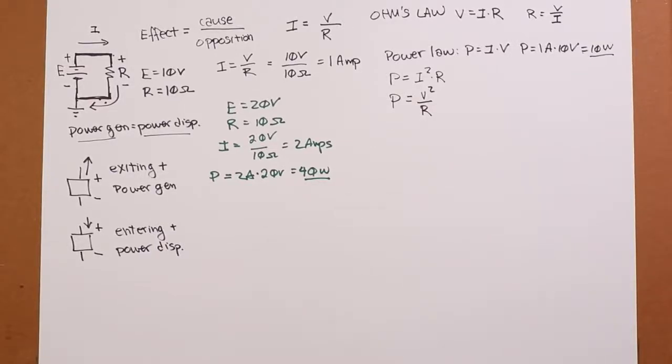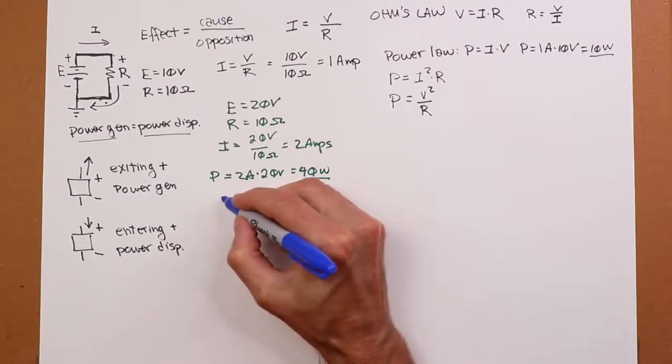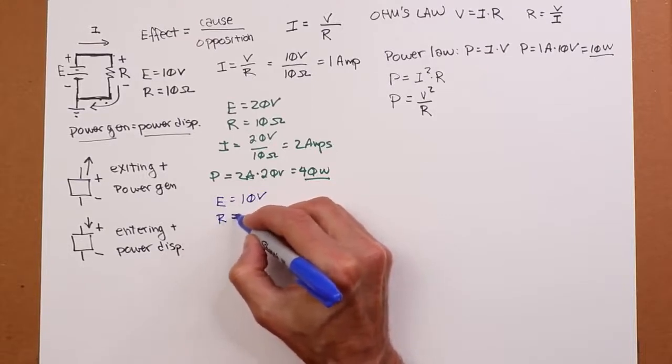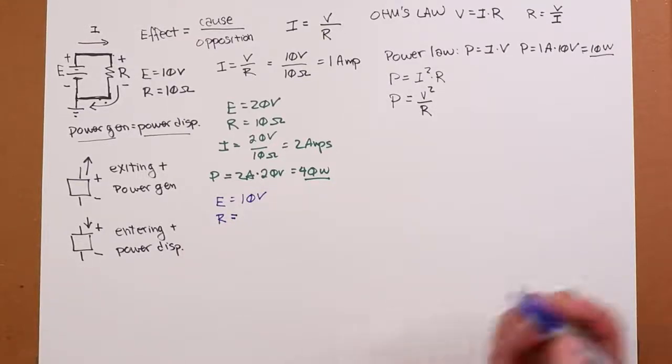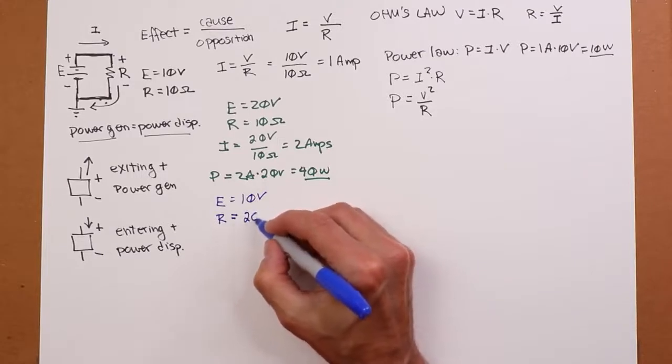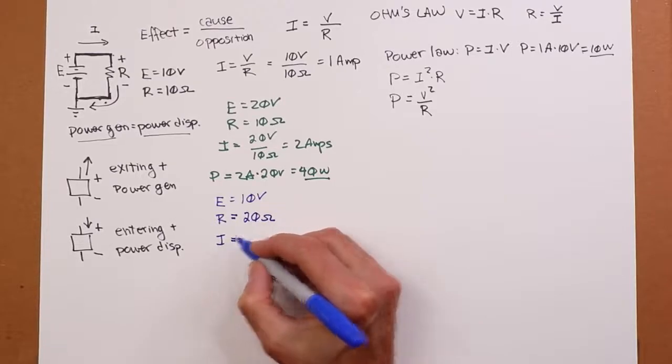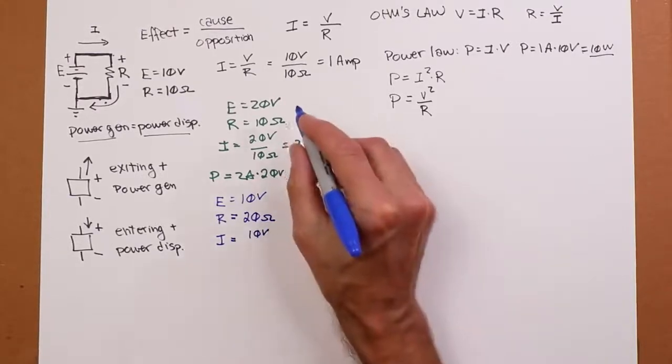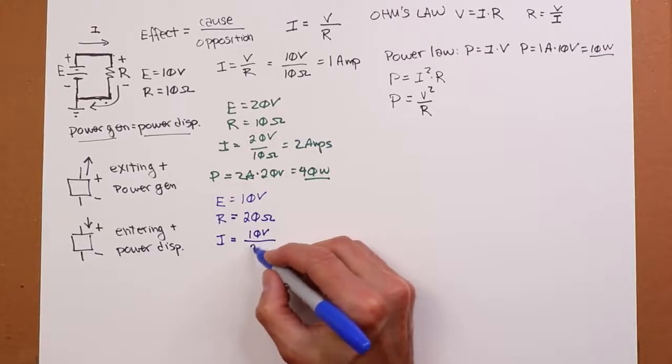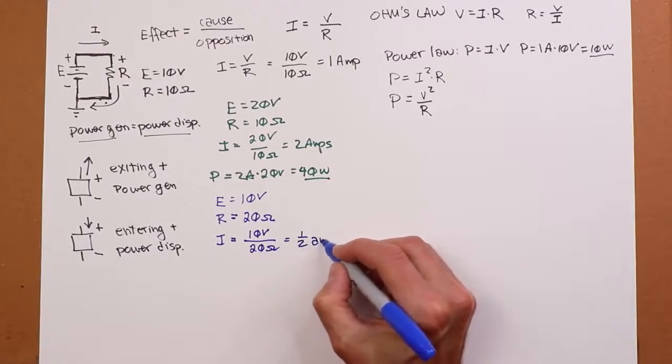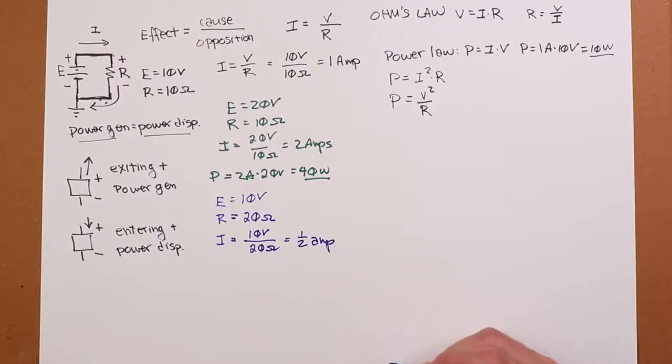Okay, now changing colors again. Let's bring that voltage back to 10 volts. And this time we'll change the resistance. Let's bump up the resistor to 20 ohms. What do we wind up with? Well, current is 10 volts, resistance is 20 ohms, so we get half an amp.